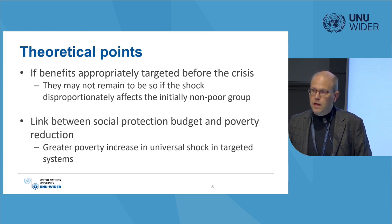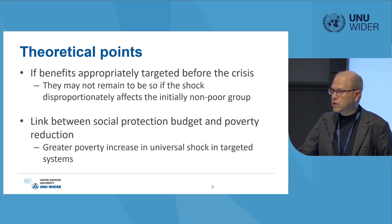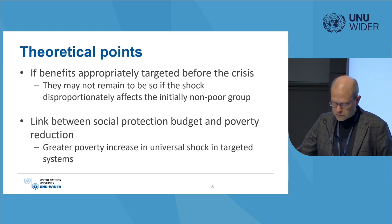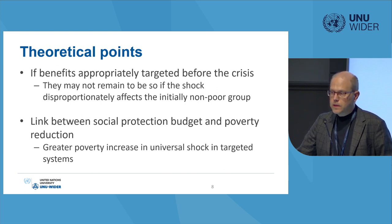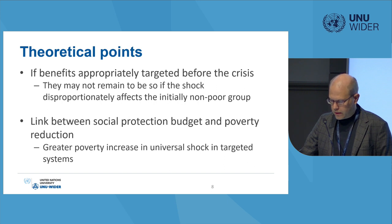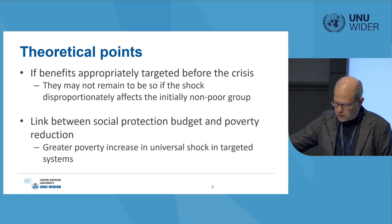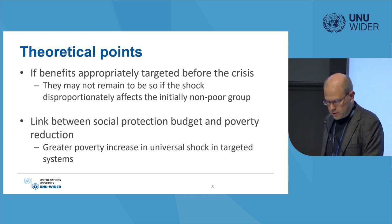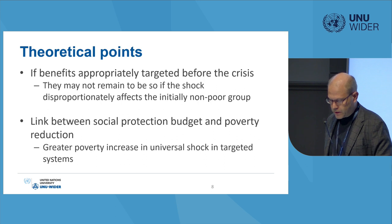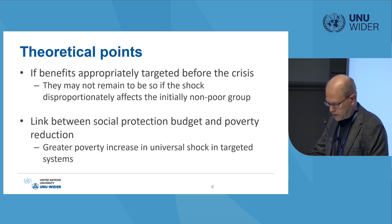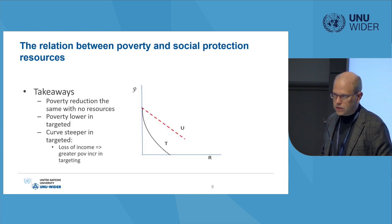We have a couple of theoretical points in the paper. If benefits are appropriately targeted before the crisis, they may or may not be appropriately targeted after the crisis, depending on how incomes change. In particular, if the crisis — like the coronavirus pandemic — mostly hits people who were not originally recipients of these transfers, then targeting efficiency is worsened. We also show, we think for the first time, a link between the social protection budget and poverty reduction.